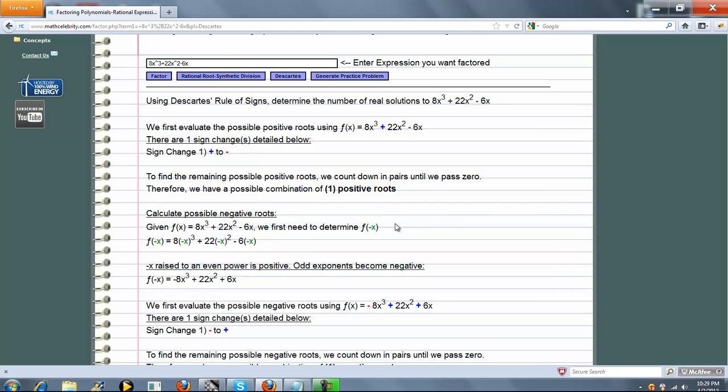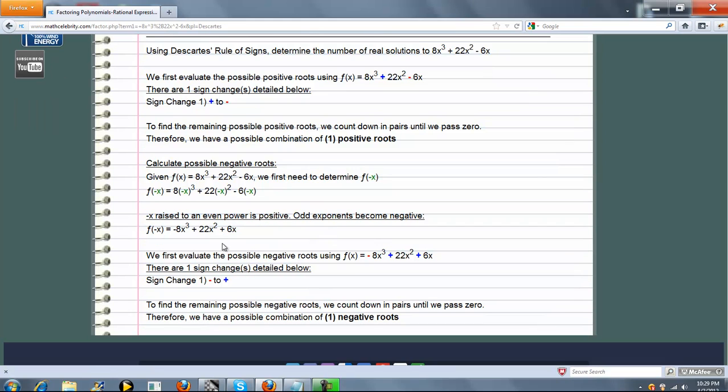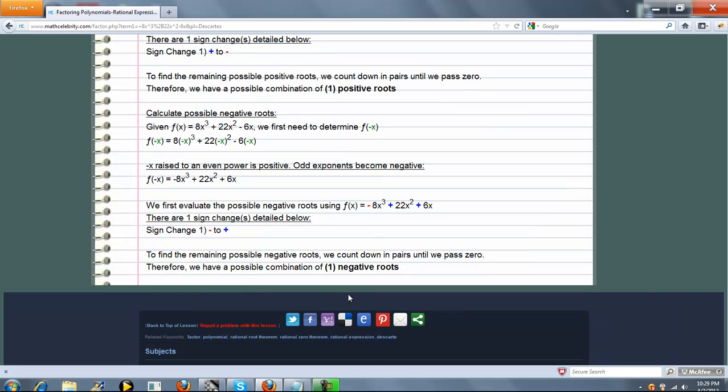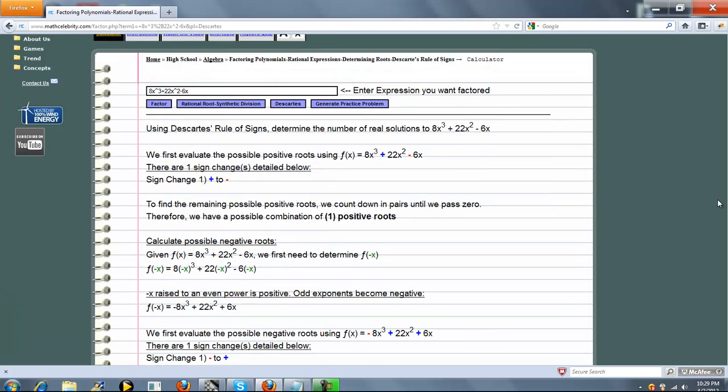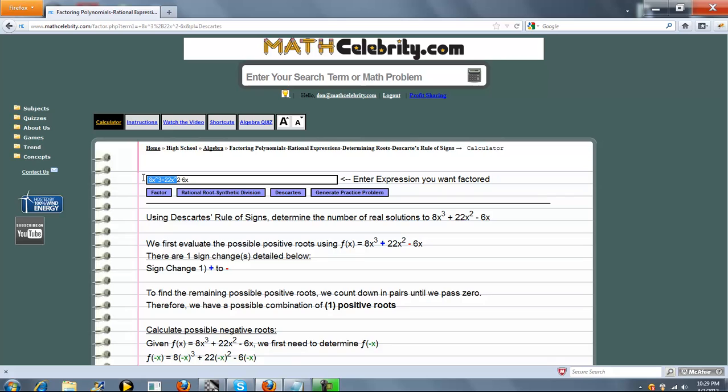Now we calculate the possible negative roots. We first plug in f of negative x and we get our values. Now we check the sign changes. As you can see here, there's only one from negative to positive, so we have the possible one negative root. You can pretty much enter any polynomial here in this box, press the Descartes button, and it will use the rule of signs to figure out how many possible positive and negative roots.